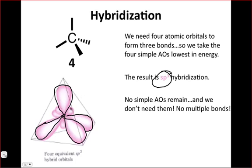As a result, we don't need to worry about any remaining 2p atomic orbitals. These hybrids, just like we saw before, can interact with hybrids on other atoms to form covalent bonds.